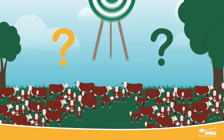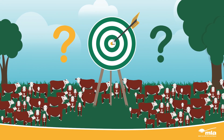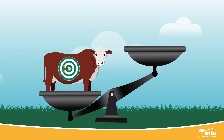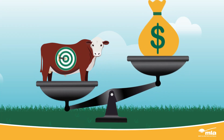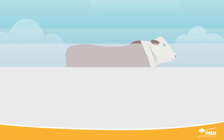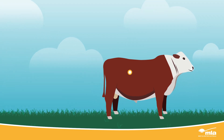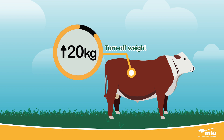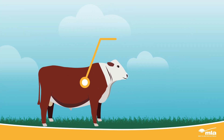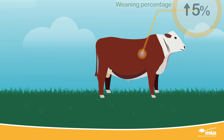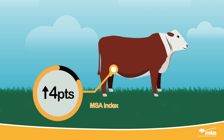Now that you've considered all of these factors, what do you want to achieve with your herd? These goals are your breeding objectives. Your objectives should be balanced to include all factors which influence productivity and profit. For example, your breeding objectives over the next five years may be to increase steer turnoff weights by 20 kilograms at the same age, increase weaning percentage by five percent, and increase the MSA index by four points.